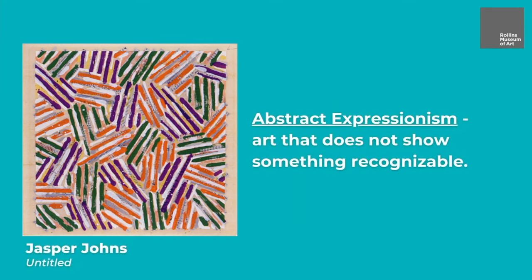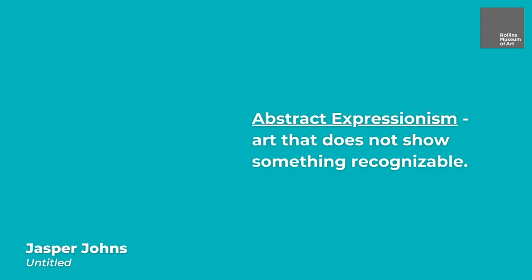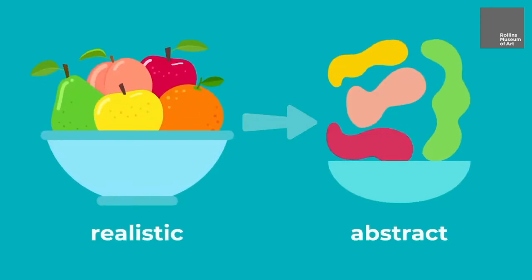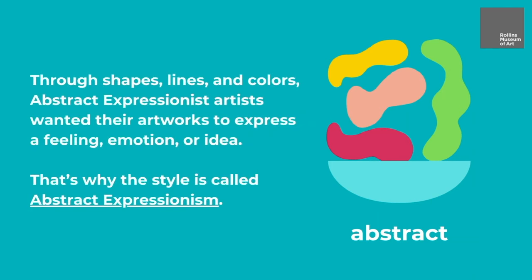Abstract expressionism refers to art that does not show something recognizable. For example, instead of painting a bowl of fruit, an abstract expressionist artist would paint shapes and colors that were not meant to represent or recreate a real object. This kind of image is called abstract.